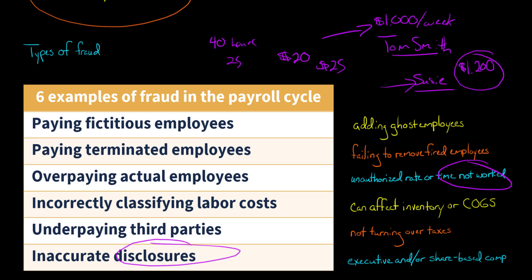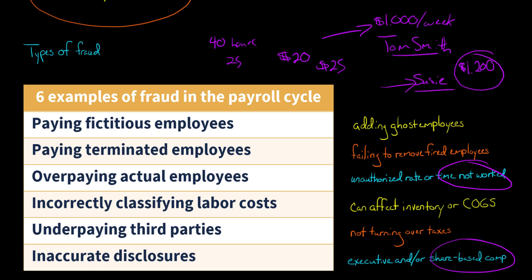There are also disclosure issues, particularly related to executive compensation. Companies — especially publicly traded companies in the U.S. — have to make extensive disclosures about executive compensation and share-based compensation. Share-based compensation comes into play because if you're granting someone options, the question is what is the fair value of those options, and you use a pricing model to calculate that fair value.